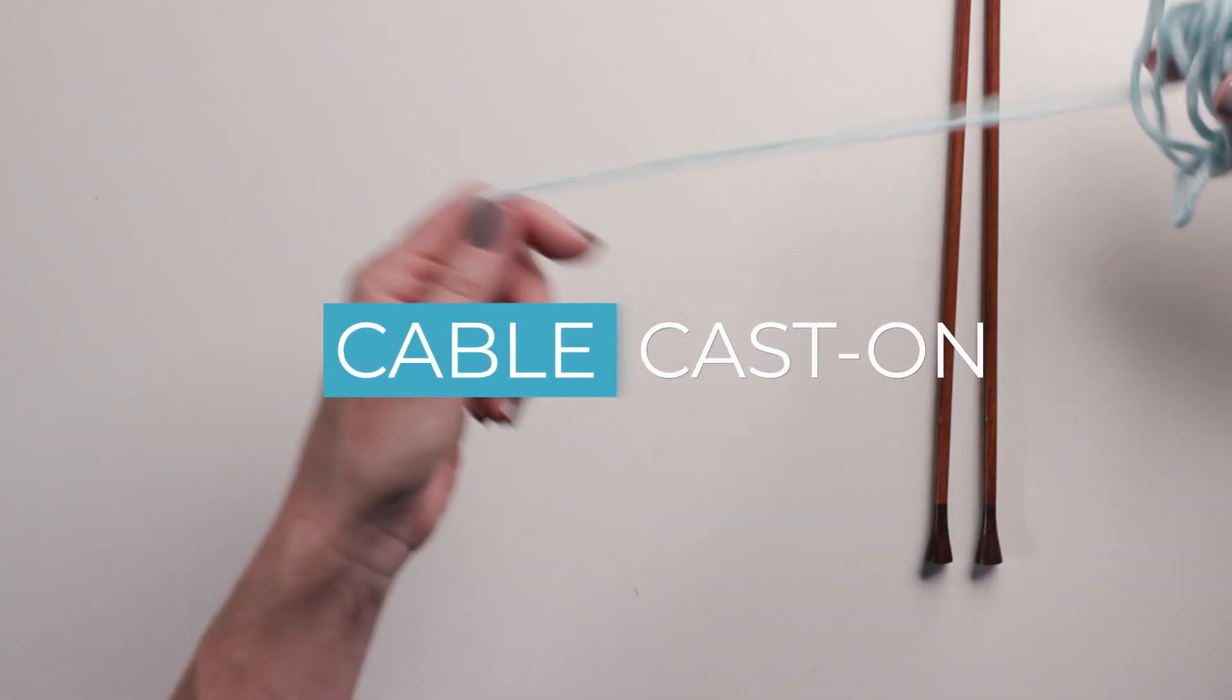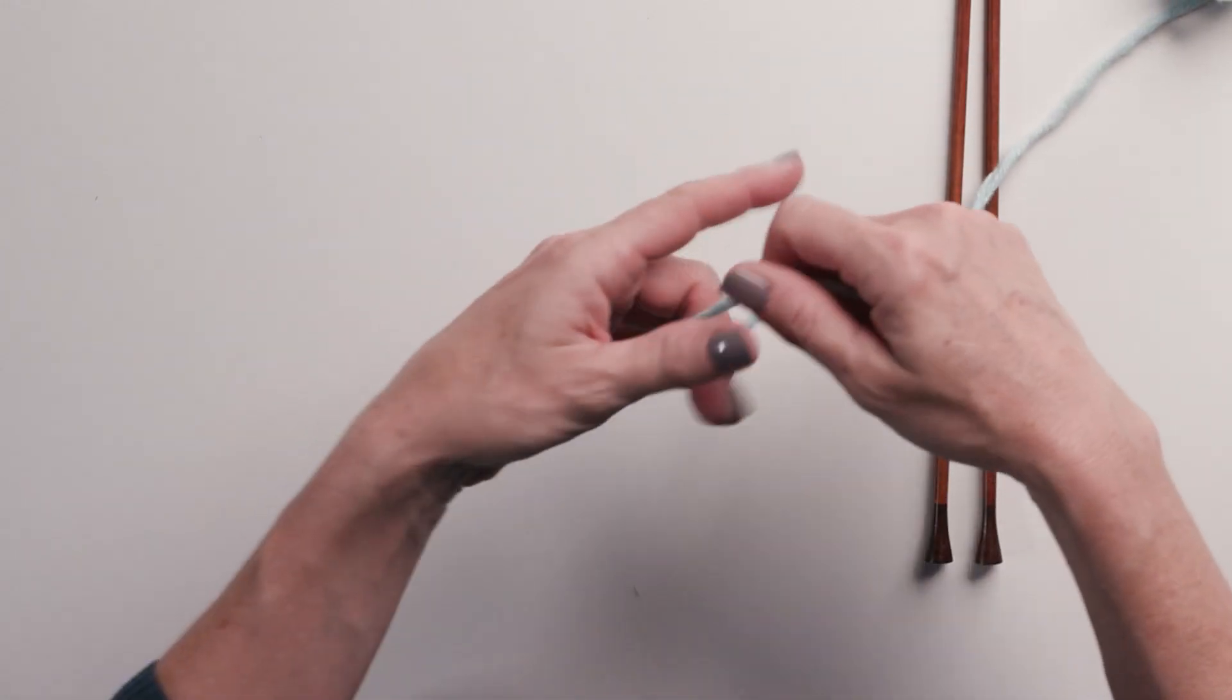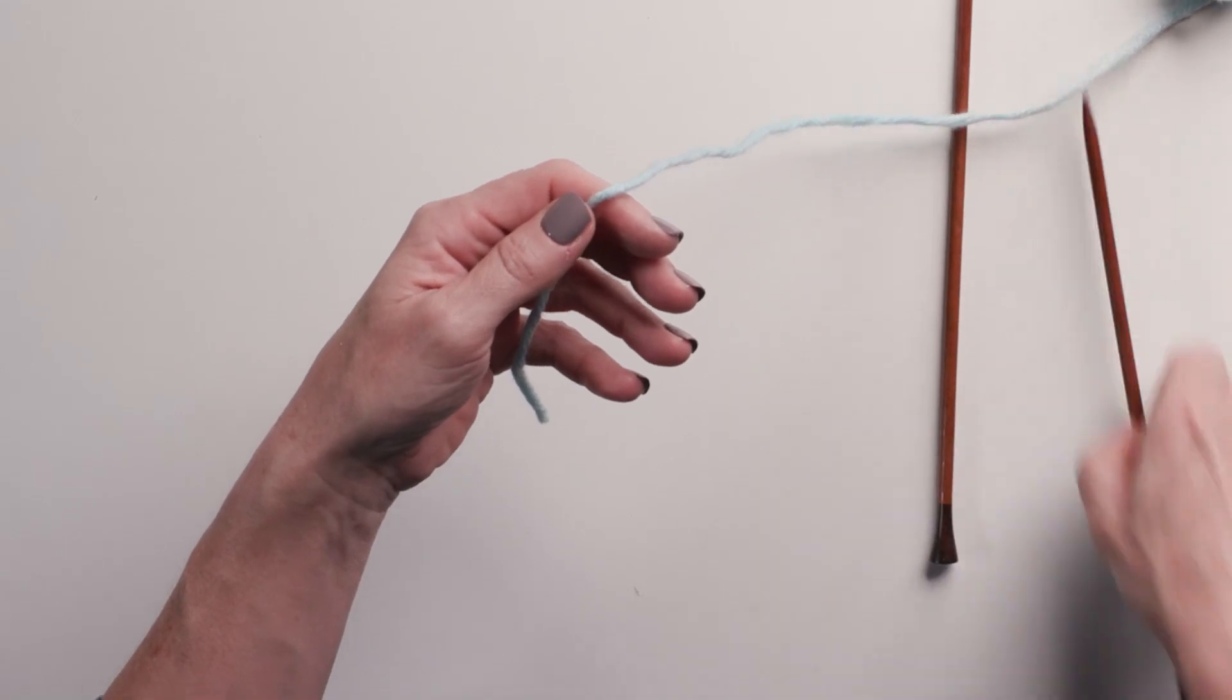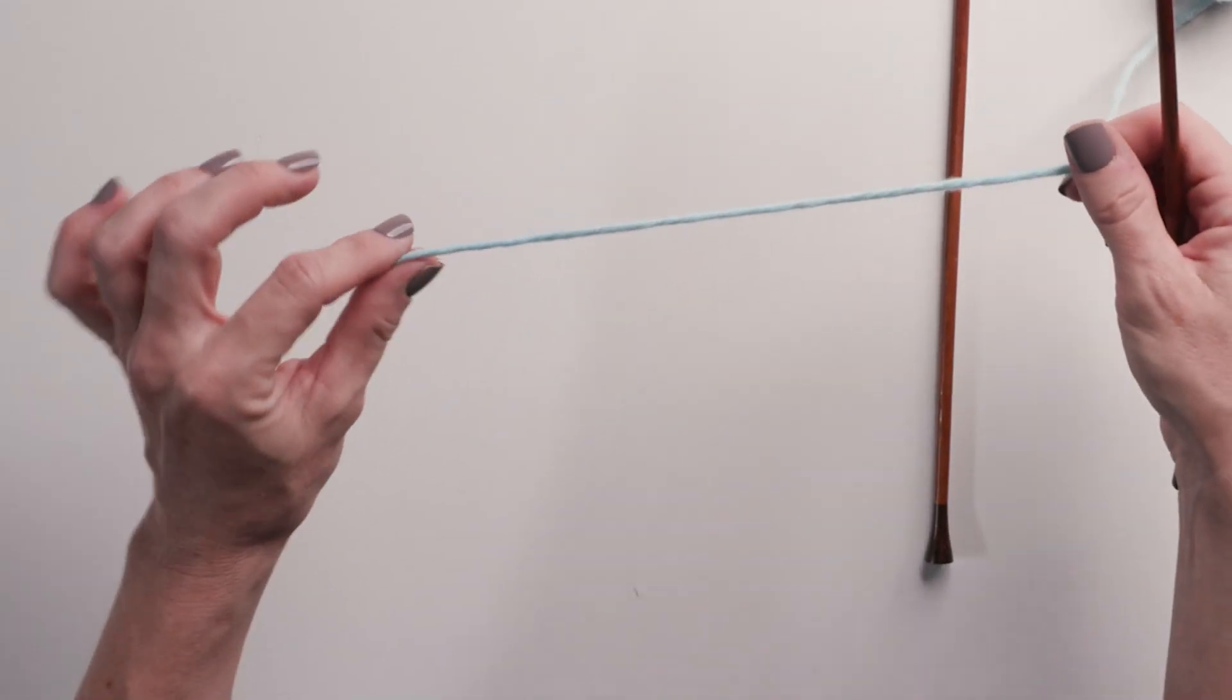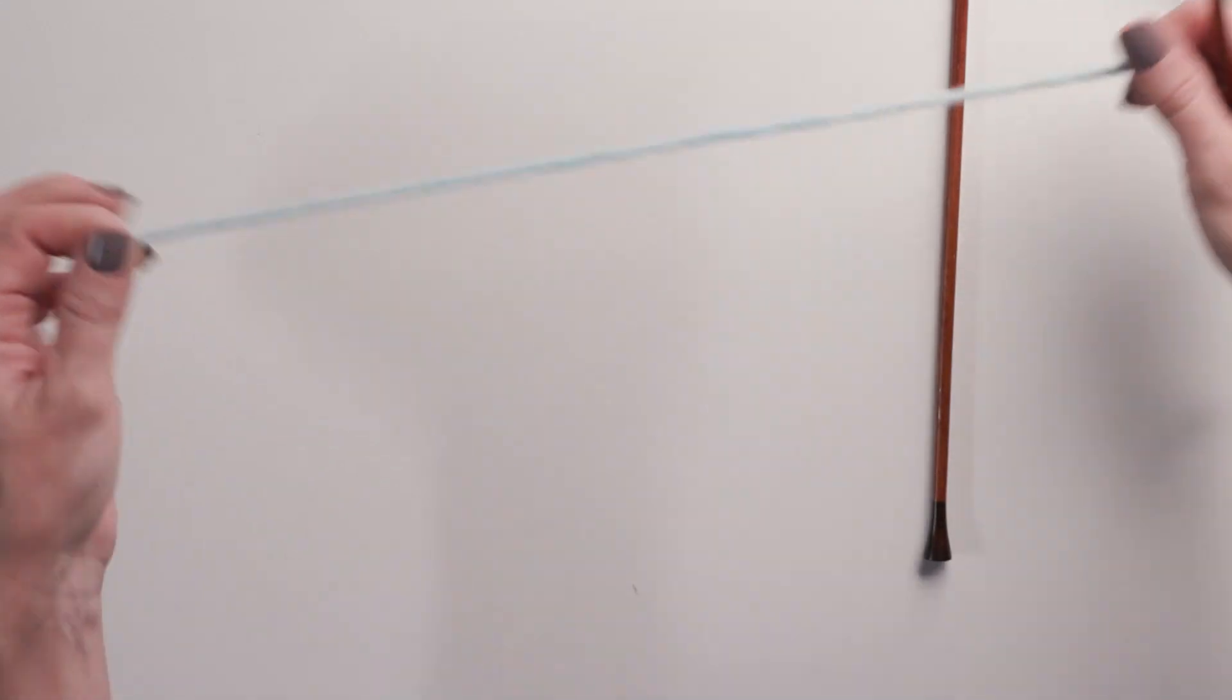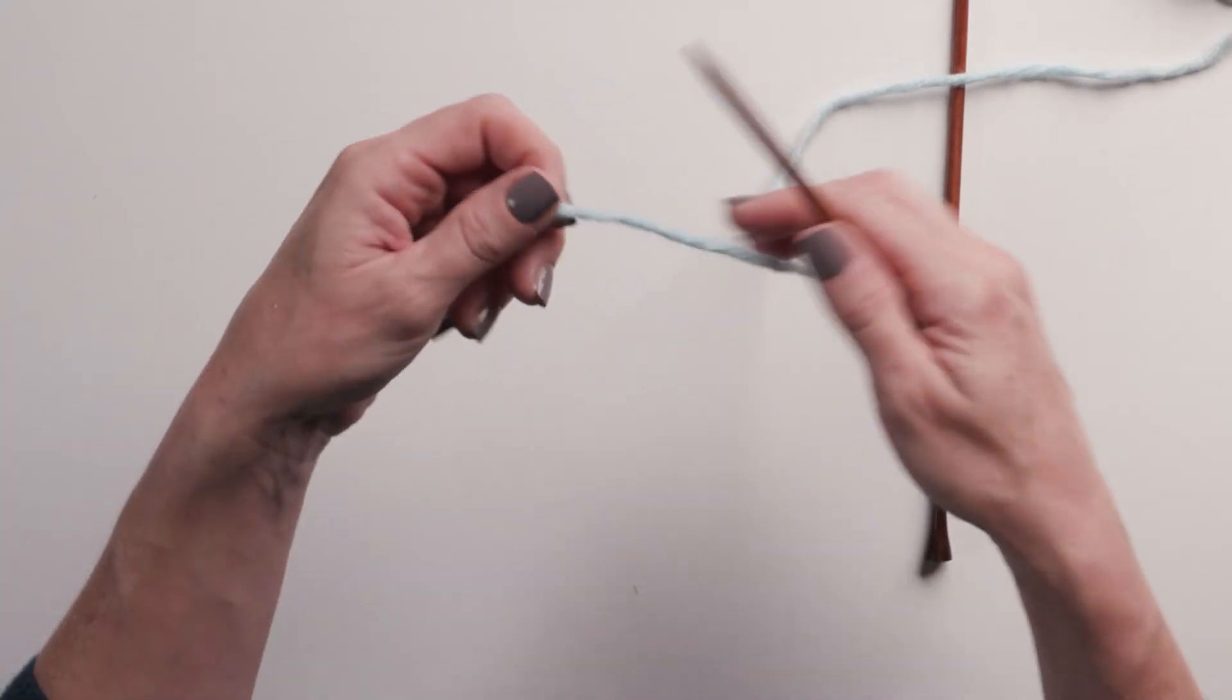I'm going to show you the cable cast-on. This is similar to a knitted cast-on, and what I really like about it is, unlike the long tail, you do not need to wind off a large amount of yarn.